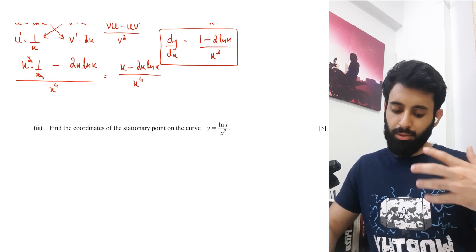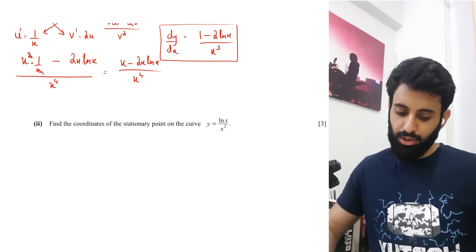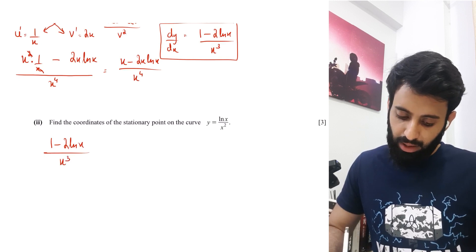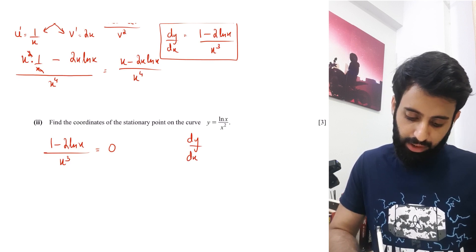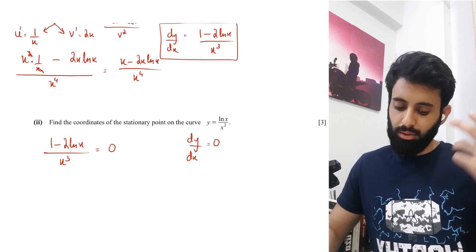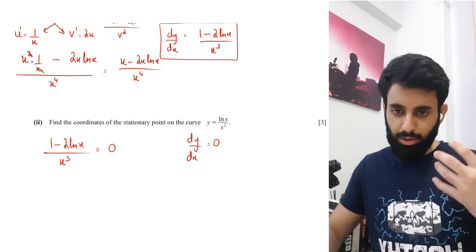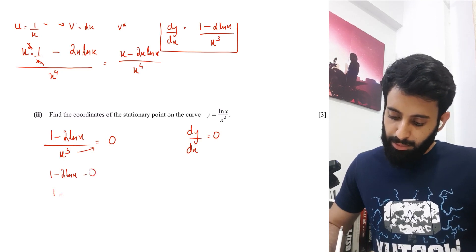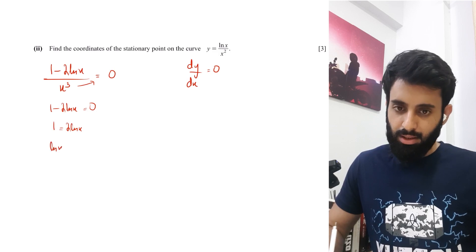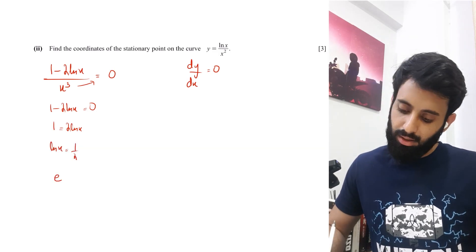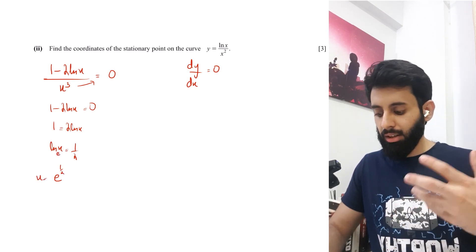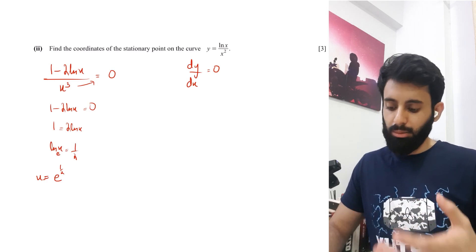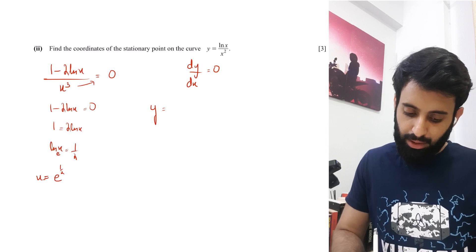For the stationary point, set dy/dx = 0. This gives 1 minus 2lnx = 0, so lnx = 1/2, which means x = e^(1/2). To find the y-coordinate, substitute x = e^(1/2) into the original equation: y = ln(e^(1/2)) / (e^(1/2))^2.